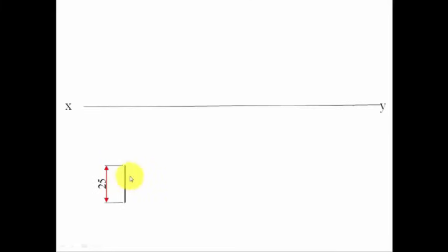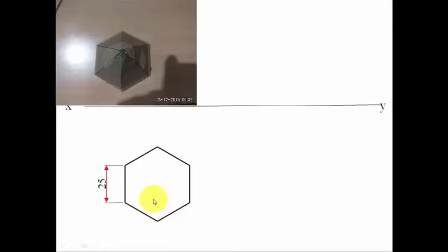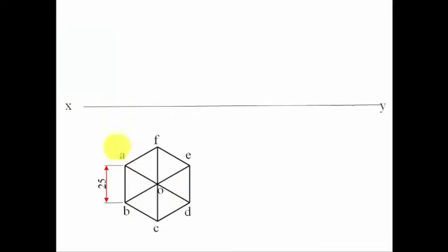This edge has a length of 25 millimeters. A hexagon has internal angles of 120 degrees, so keep your protractor here and take 120 degrees anti-clockwise and 120 degrees clockwise to get the next sides. Repeat this at each vertex to close the hexagon. This is the true shape of the base — the hexagon itself. The apex is also placed, giving us the complete top view. Let's name each point: A, B, C, D, E, F for the base vertices and O for the apex.